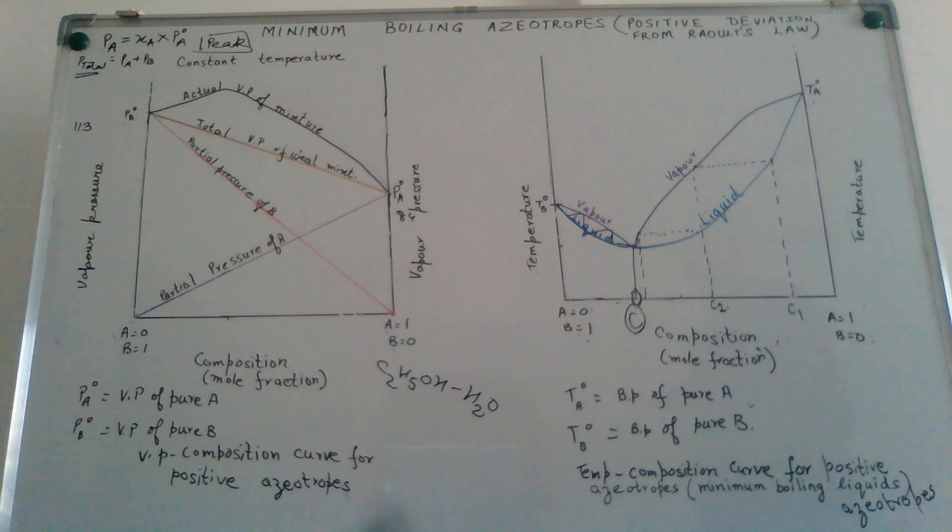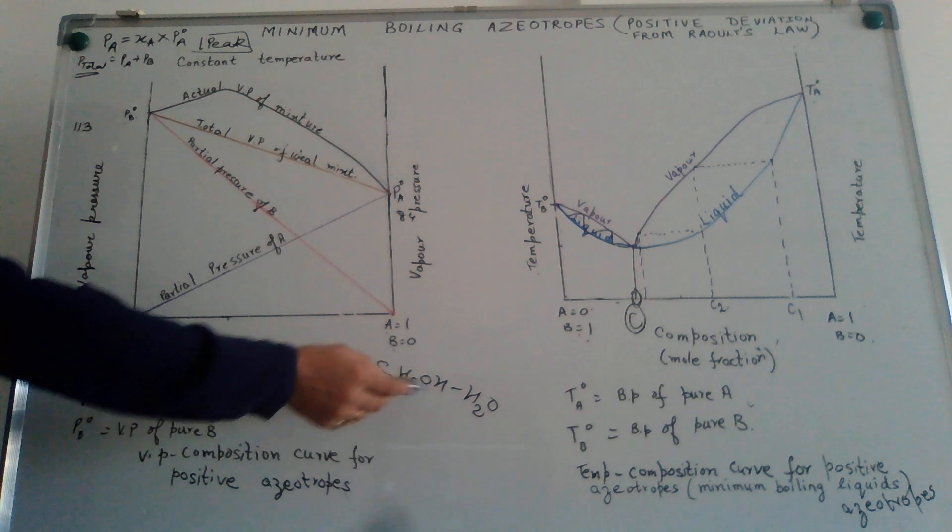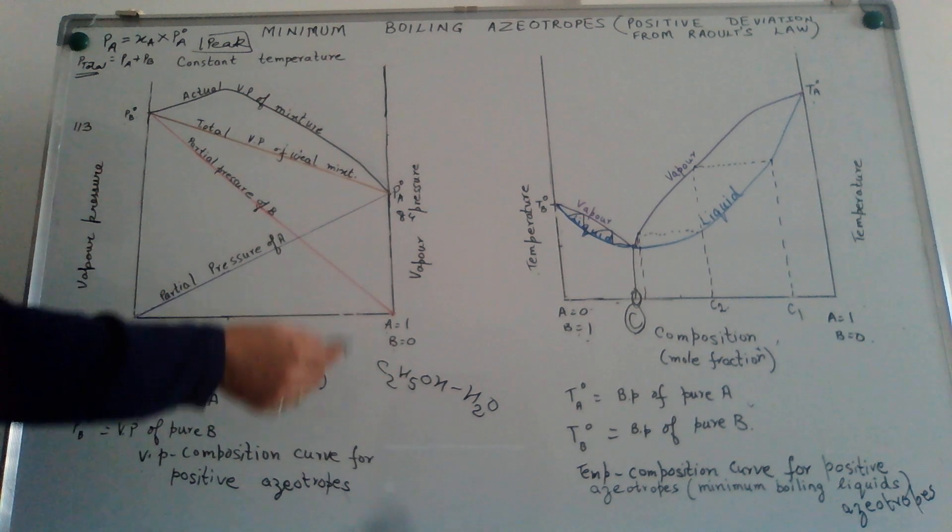Why does this behavior happen? What prompts this behavior? Here, what happens is, when we are saying that the actual vapor pressure of the mixture becomes greater, in other words, what is happening over here is that the forces of attraction between the two are becoming lesser.